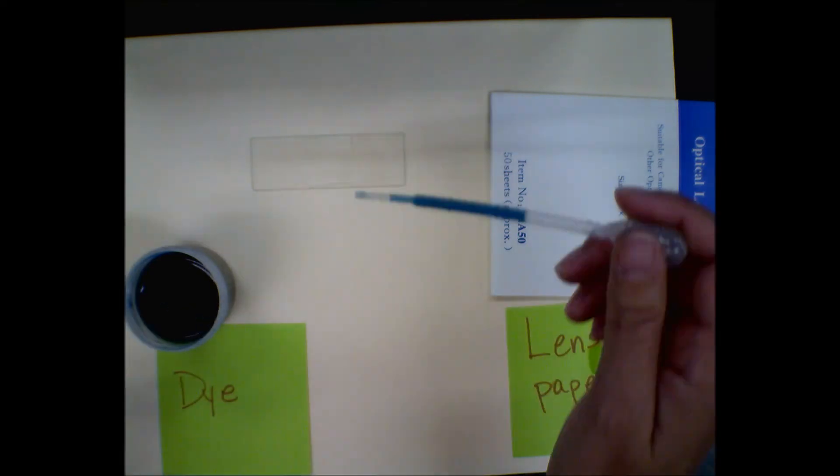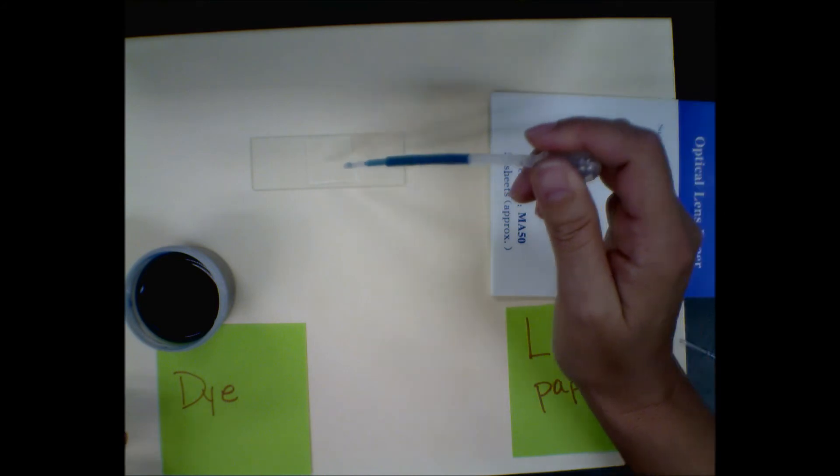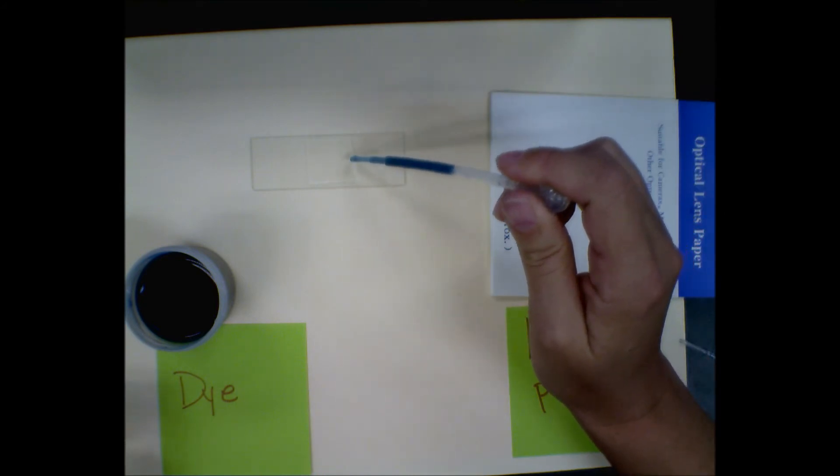Next you just put a drop of dye at the edge of the cover slip. You don't put it underneath the cover slip because then it'll get too dark.